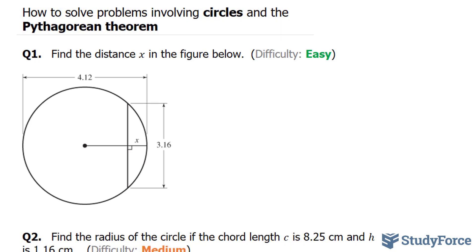So we're looking for this part that's missing, and what we've been given is the diameter. The diameter is the distance from here all the way to here, it's 4.12. We've also been given the distance of this chord, this line segment that spans from here to here and it's 3.16.